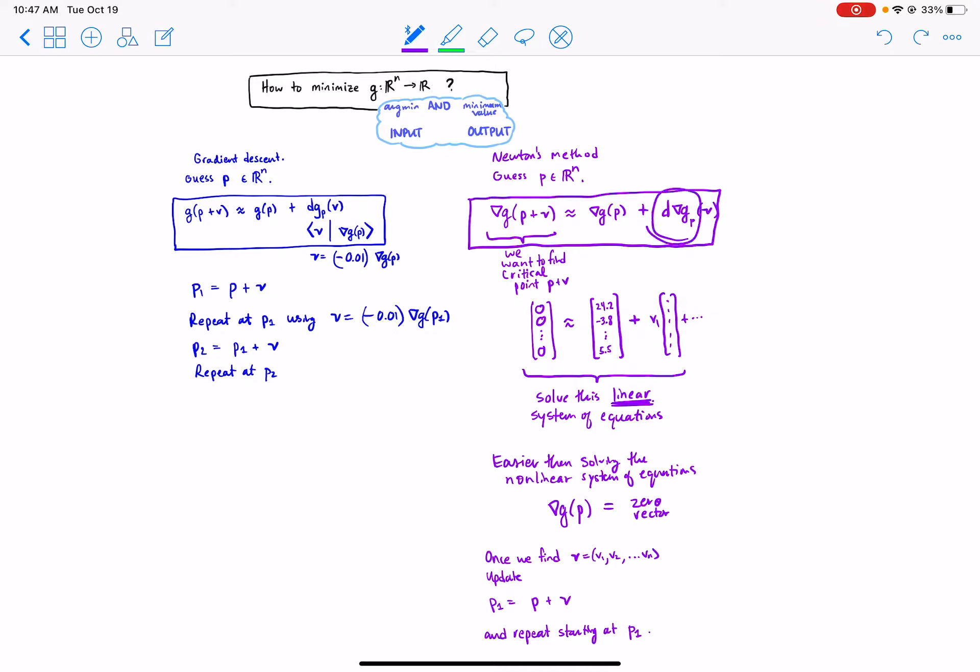requires us to calculate more derivatives, more partial derivatives. The big difference here is that gradient descent linearizes G, whose derivative is the gradient at that point P where we guessed, whereas Newton's method linearizes the gradient map, whose derivative is now a much bigger derivative involving a Jacobian matrix with many columns.